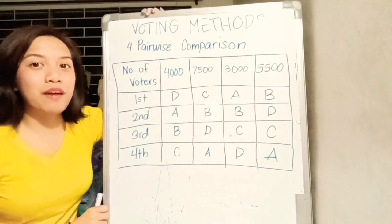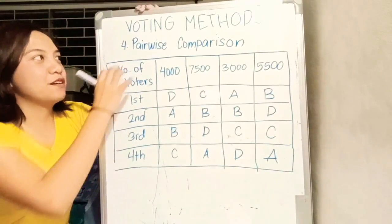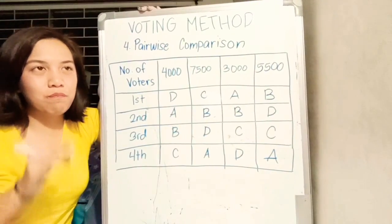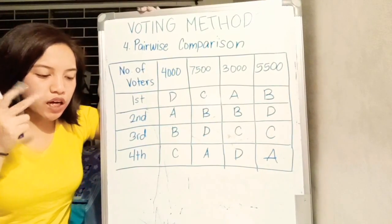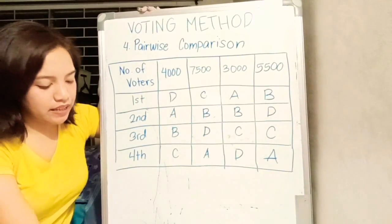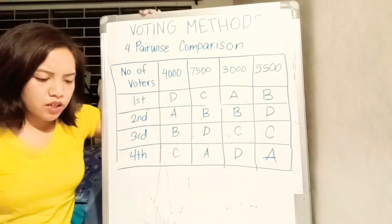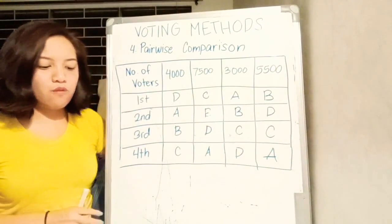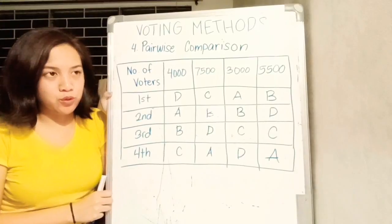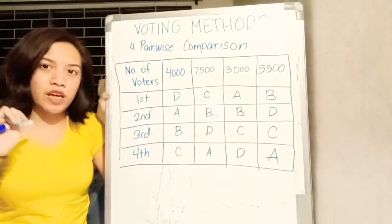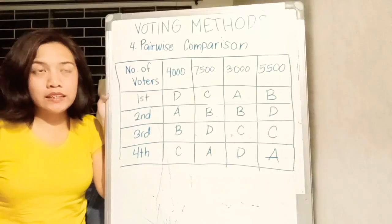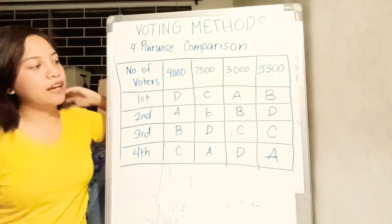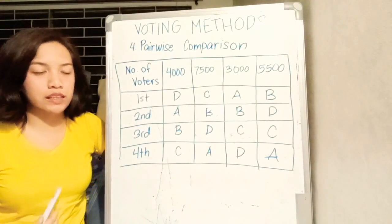The last voting method for today is the pairwise comparison. Kapag sinabing pairwise comparison, you compare two candidates head-to-head. You award each candidate one vote, whoever wins in the head-to-head comparison. The candidate with the most points wins. We have candidates A, B, C, and D again for an election.